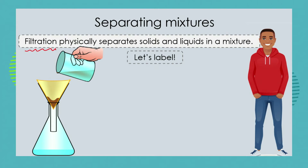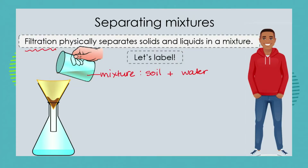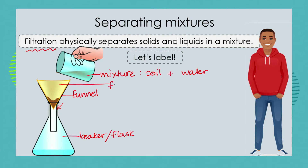Let's have a look at this picture and label it to see how the process of filtration works. We would need to have our mixture — in this case a soil sample mixed with a bit of water, which helps the filtration process. We're going to set up a beaker or flask to collect the liquid, a funnel to direct the liquid through the narrow opening, and something called filter paper.